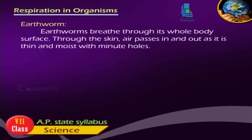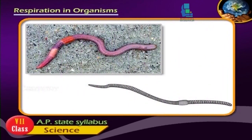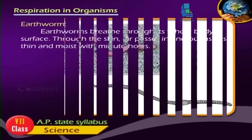Earthworm: An earthworm breathes throughout its whole body surface. Through the skin, air passes in and out as it is thin and moist with minute holes.